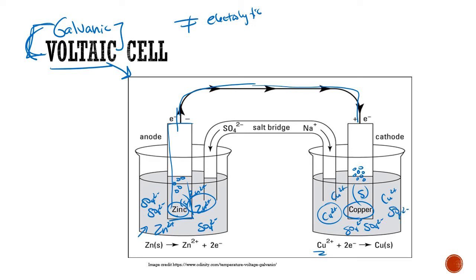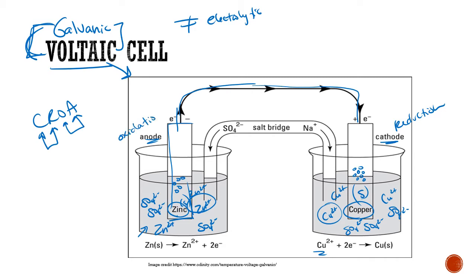This is the cathode and this is the anode. Remember CROA — cathode is reduction, so reduction is happening over here on the cathode. Oxidation happens on the anode, so oxidation is happening here on the anode.